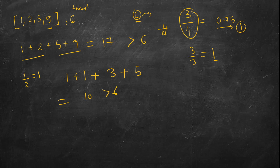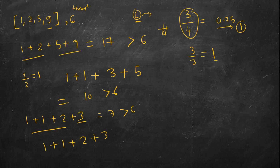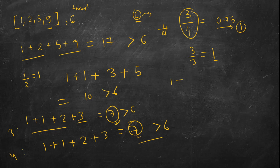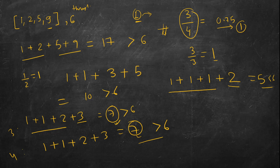Trying divisor 3: 1+1+2+3 = 7, more than 6. Trying divisor 4: also 1+1+2+3 = 7, more than 6. You can see multiple divisors give the same output. Trying divisor 5: ceiling(1/5)+ceiling(2/5)+ceiling(5/5)+ceiling(9/5) = 1+1+1+2 = 5, which is less than or equal to 6. So 5 works.